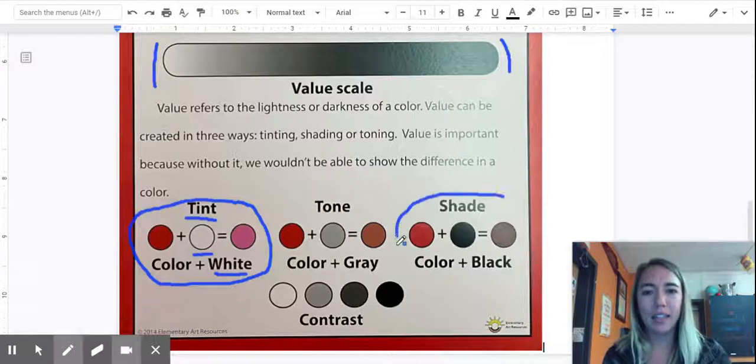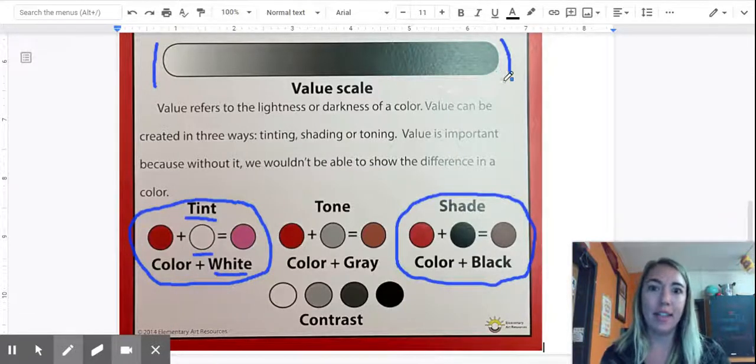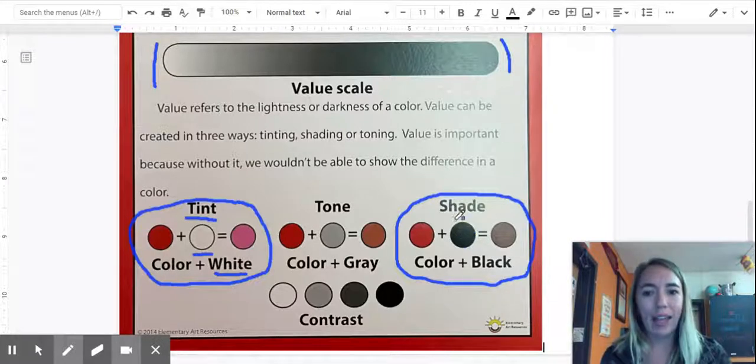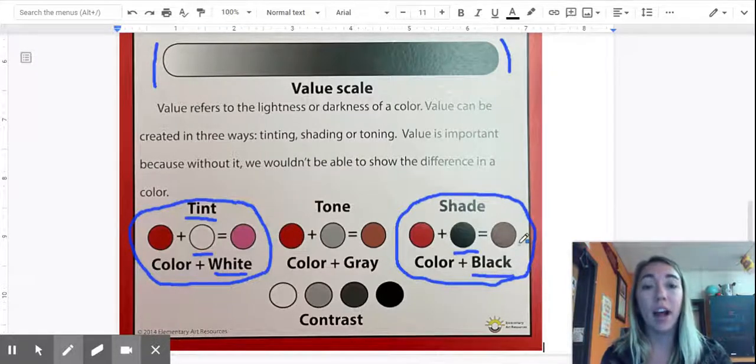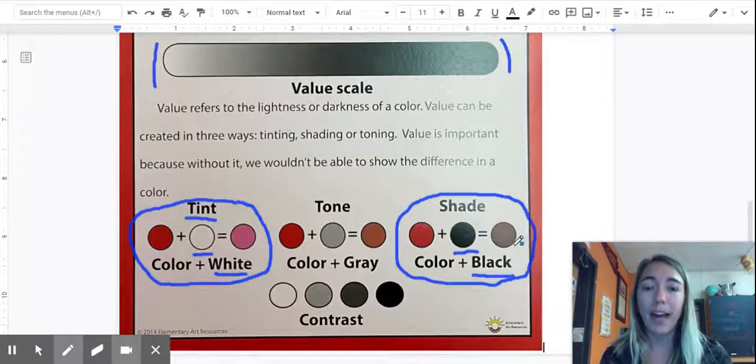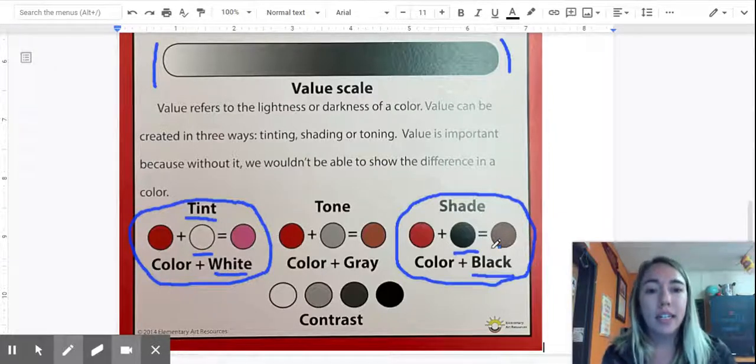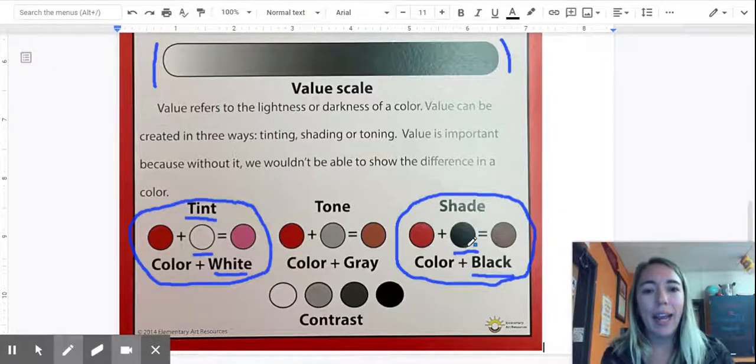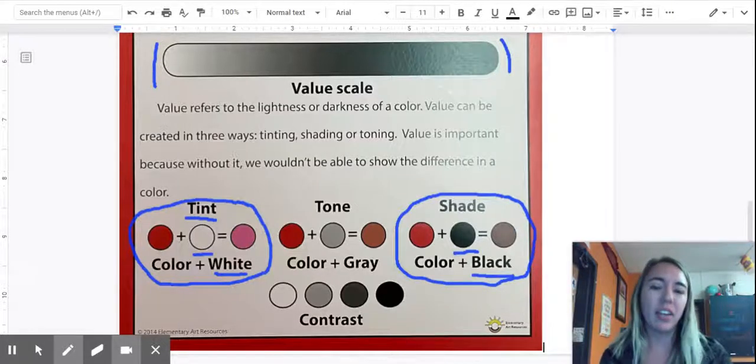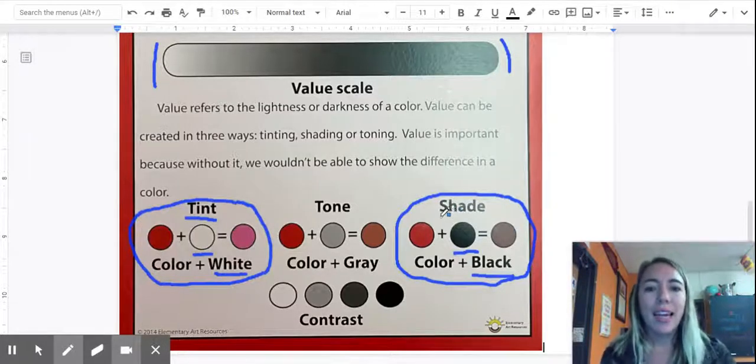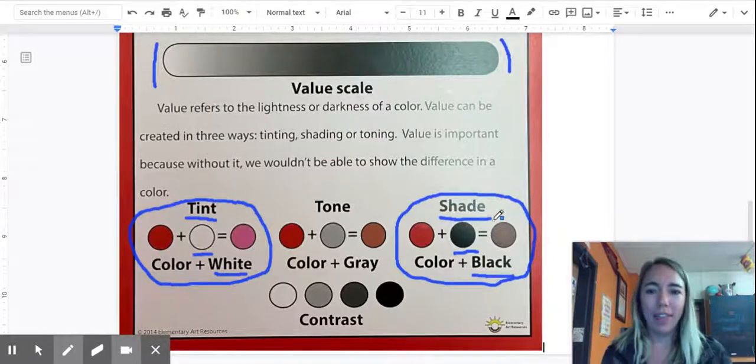If I add, instead of white, I add the opposite in the value scale, I add black. So I take a hue, I add black, I create a darker value of that color or hue. So here you can see I had red, I add black, and now I have like a real dark and kind of gray looking red. That is a shade of red that I created.